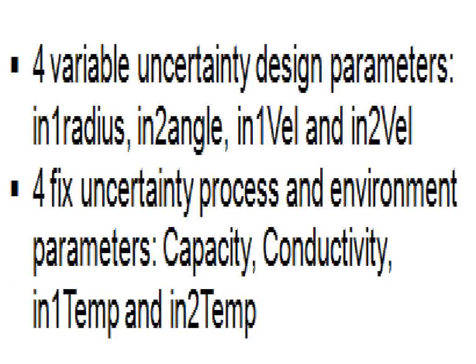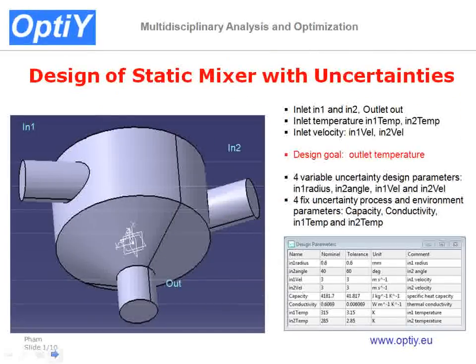We have four variable uncertainty design parameters: the radius of the inlet pipe one, the angle of the inlet pipe two, and the velocity of the entering water at inlet pipe one and two. We also have four fixed uncertainty process parameters: the capacity, the conductivity, and the temperature of the water at inlet pipe one and inlet pipe two.